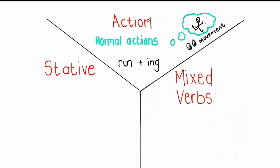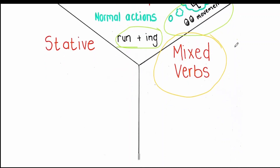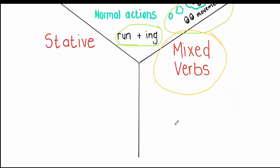Action verbs are verbs where you can imagine the movement in your mind. So when you close your eyes, you can imagine a person who runs or a person who works. We can say run, we can say running. Stative or still verbs means we don't imagine movement in our mind. Mixed verbs are a bit different. We call it a mixed verb because if you can imagine a glass filled with water and filled with some form of cold drink — they are mixed, two in one glass — and sometimes we are not sure how to distinguish between them.